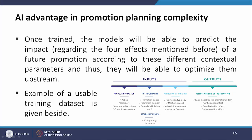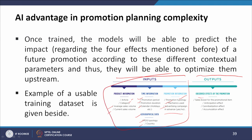Once trained, the model will be able to predict the impact of all four effects of a future promotion according to different contextual parameters, and thus optimize them upstream. Inputs include product information such as article, category, average sales volume, and current sales volume; promotion period, duration, calendar, geographical data, and country; and promotion information such as promotion typology, mechanics used, and whether advertising was claimed in advance. The output is the observed effect of the promotion: sales boost for the promotional item, anticipation effect, cannibalization effect, and accumulation effect.